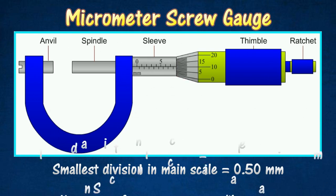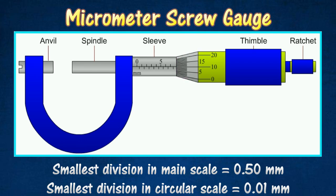The circular scale is divided into 50 divisions. One complete turn of the thimble moves the spindle by 0.50 mm. Each division on the circular scale, therefore, represents a distance of 0.01 mm.